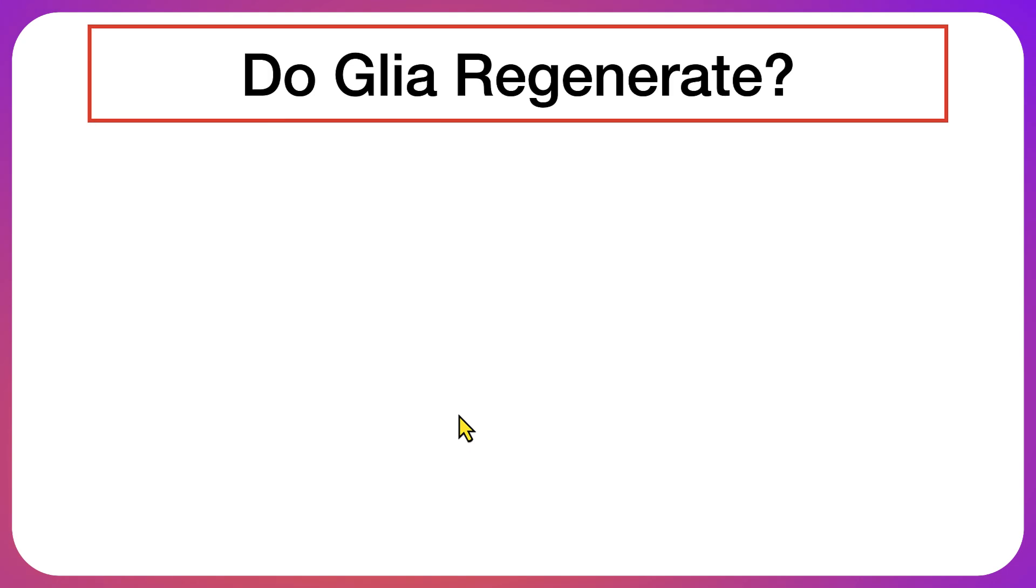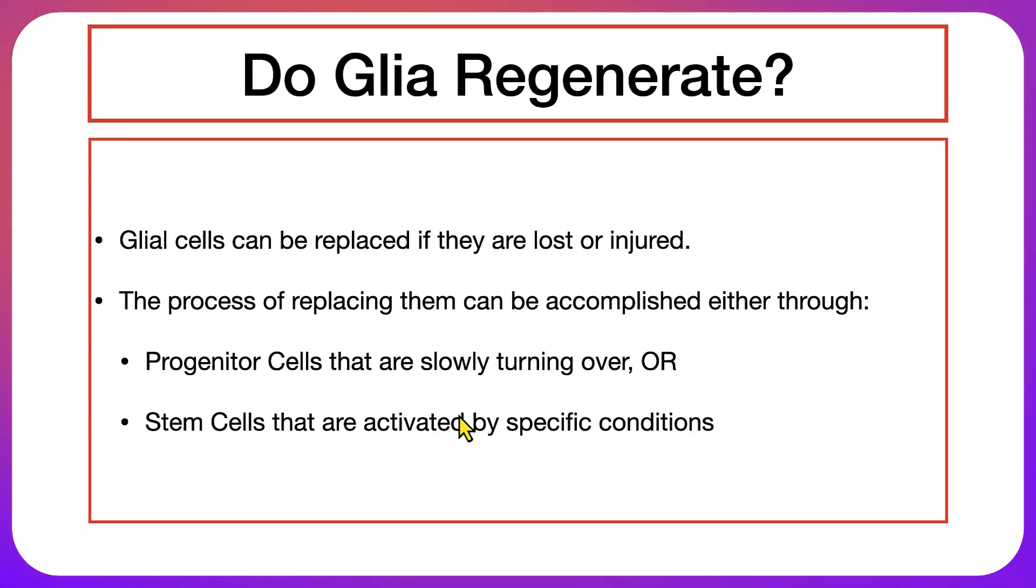Now let's talk about the last question as to whether glial cells are going to regenerate. Glial cells can be replaced if they are lost or injured, so they can regenerate. The process of replacing them can be accomplished through two ways: the first way is through progenitor cells that are slowly turning over, or stem cells that are activated by specific conditions.